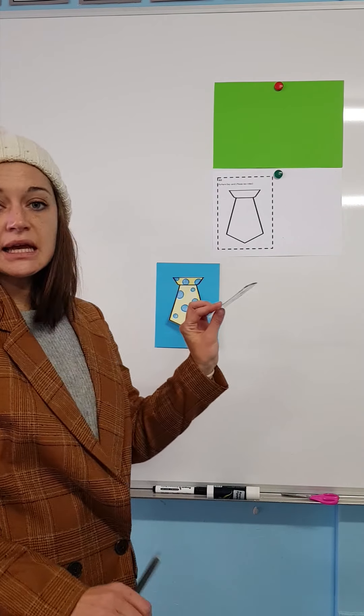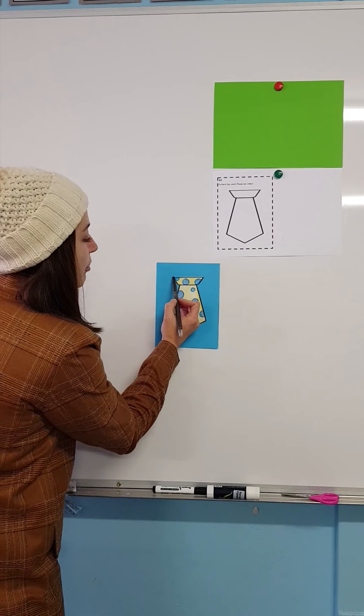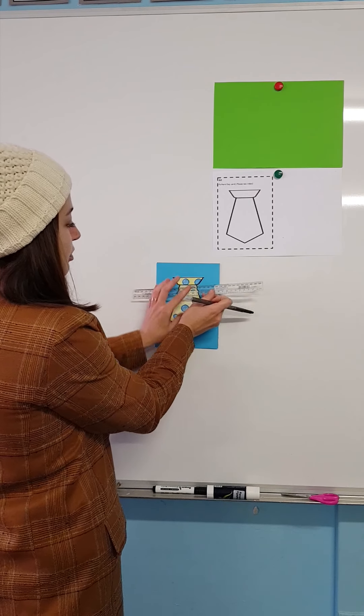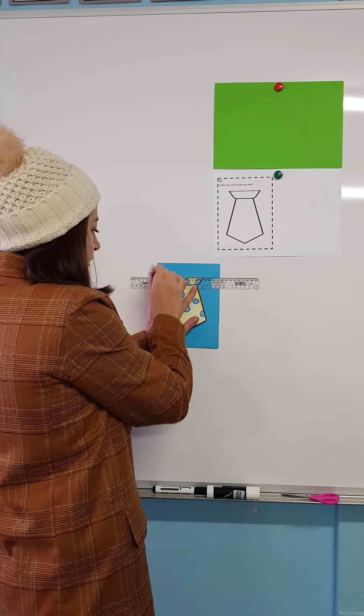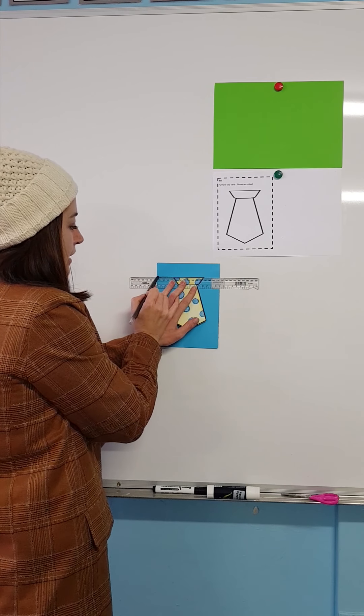I'm going to take a ruler and at the top part of my tie, I'm going to put my ruler there. Then I'm going to draw a line from the one corner of my tie to the side, and the other corner of my tie to the side.